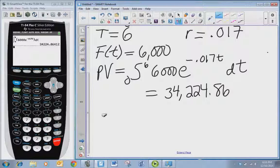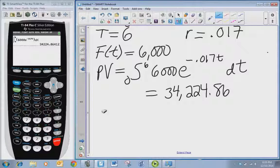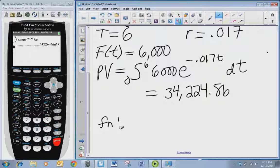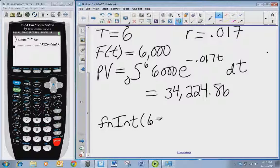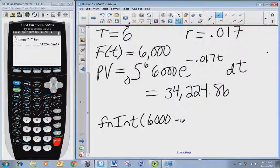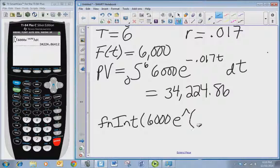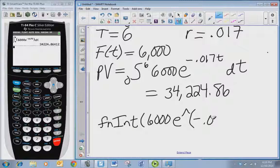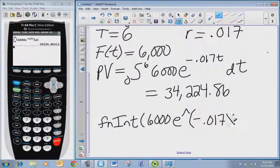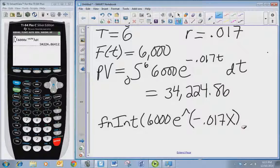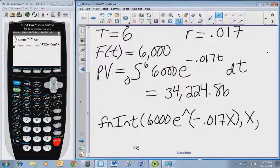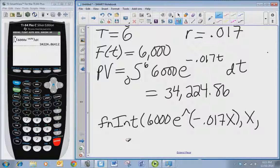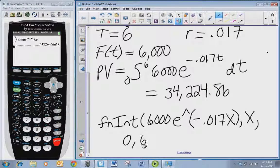You still do math 9 and what you'll see is fnInt and then open parentheses waiting for you to put the information in. So you put six thousand e, and then this will automatically come up, and in parentheses you put negative point zero one seven x because it's a calculator. Close your parentheses there, and x to tell it what to take the integral with respect to, and then zero comma six close parentheses.